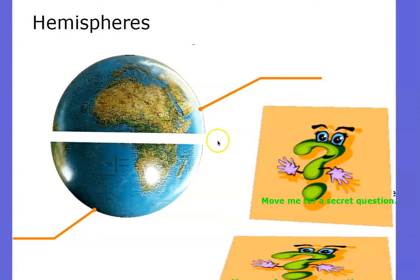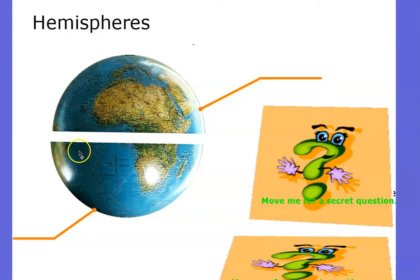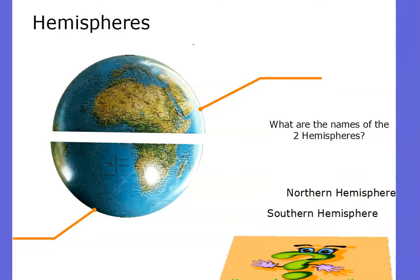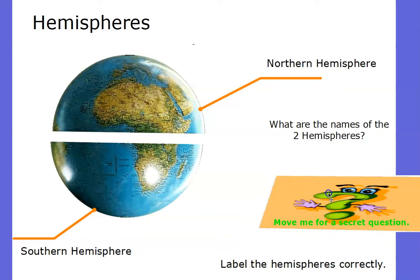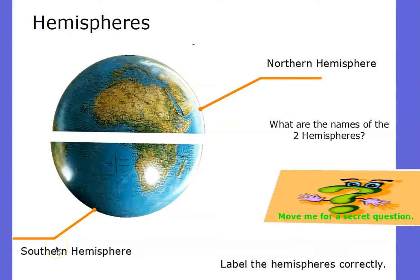When we separate the globe with the equator line from east to west, we actually separate this part of the globe from this part, and we call them hemispheres. What do you believe this hemisphere is, and what do you believe this hemisphere is? If you said the northern hemisphere is up here and the southern hemisphere is down here, you would be correct. The equator slices the globe from east to west, separating it into a north and a south. Good job labeling the hemispheres correctly!